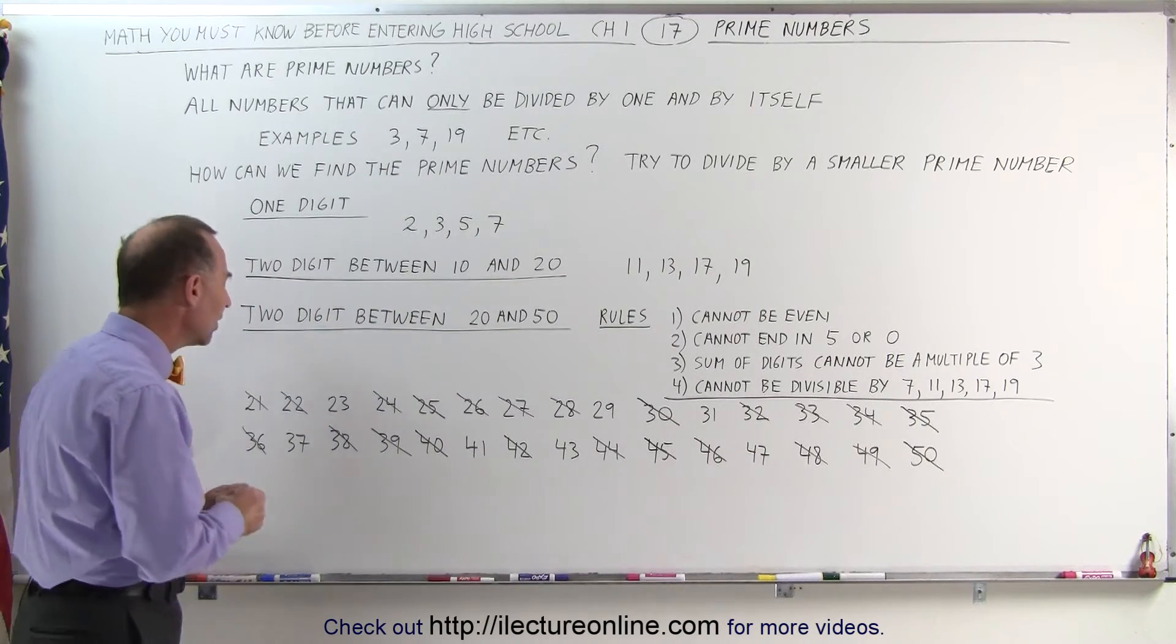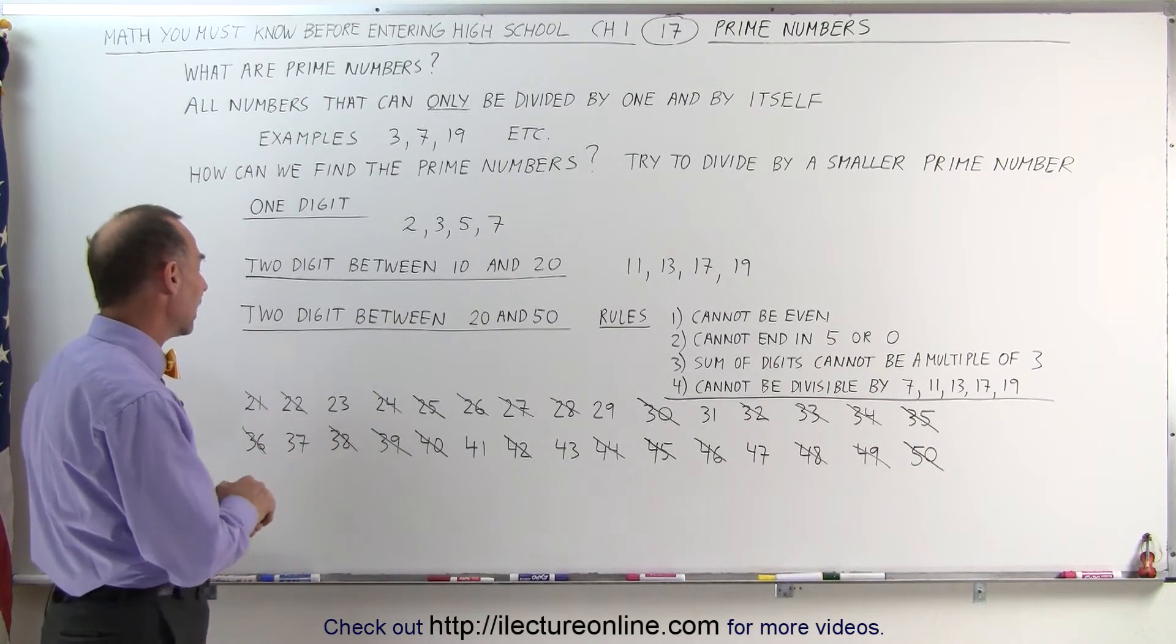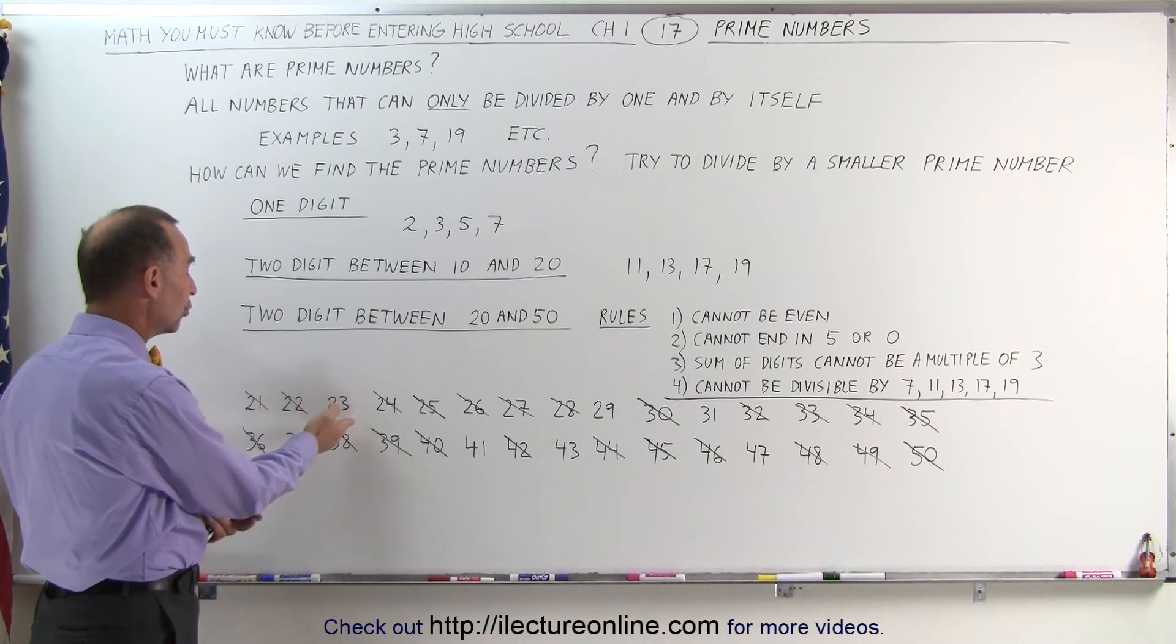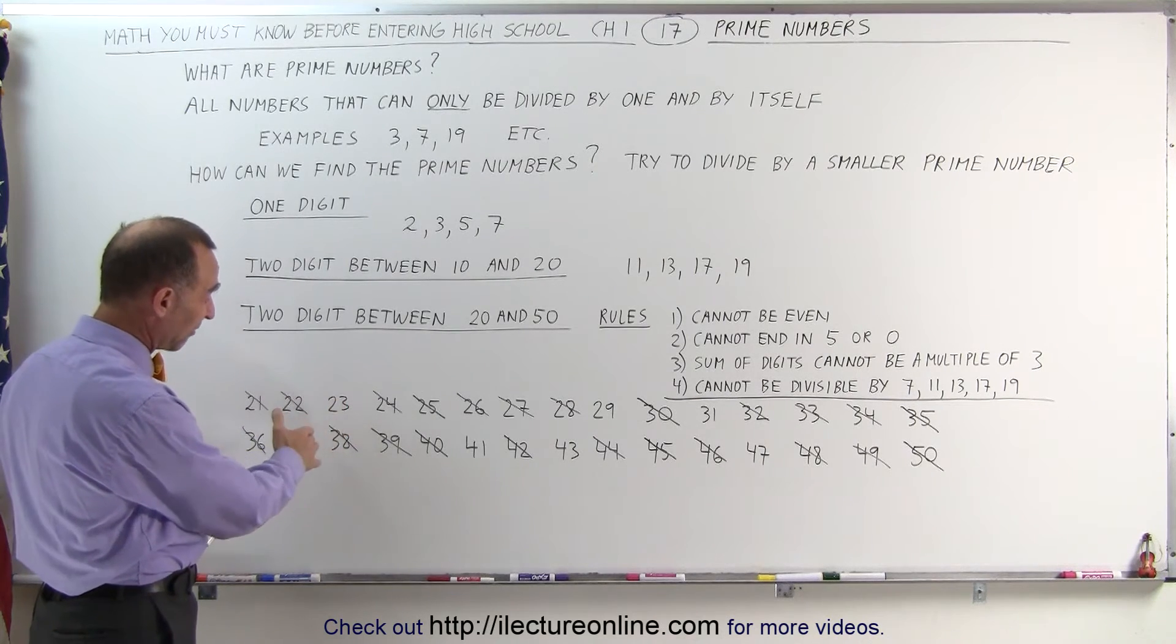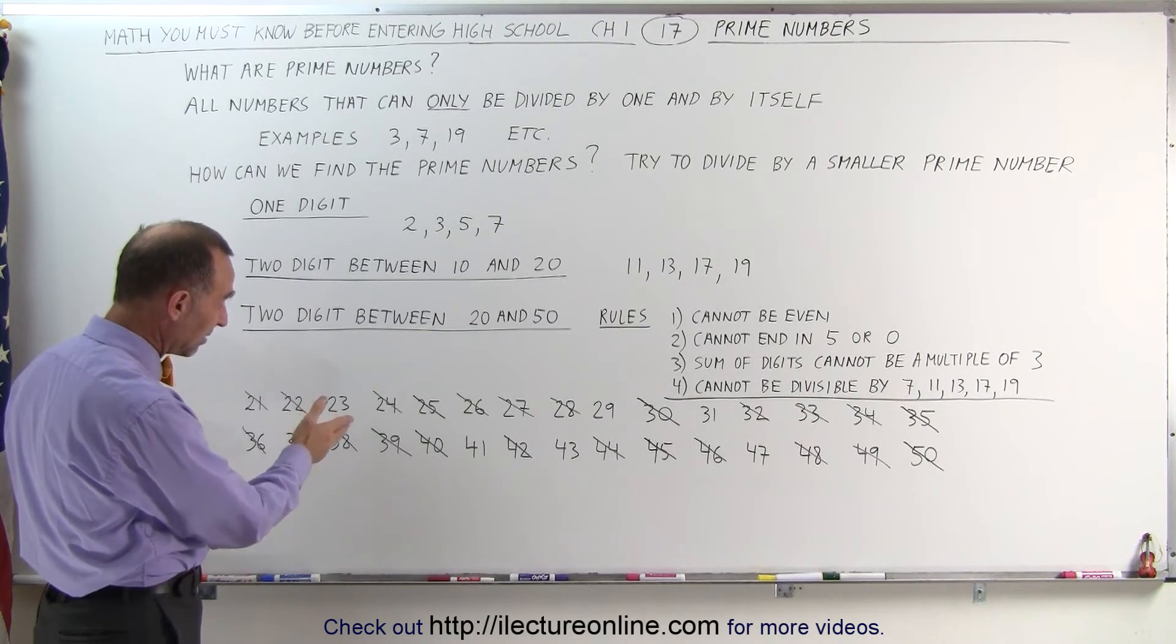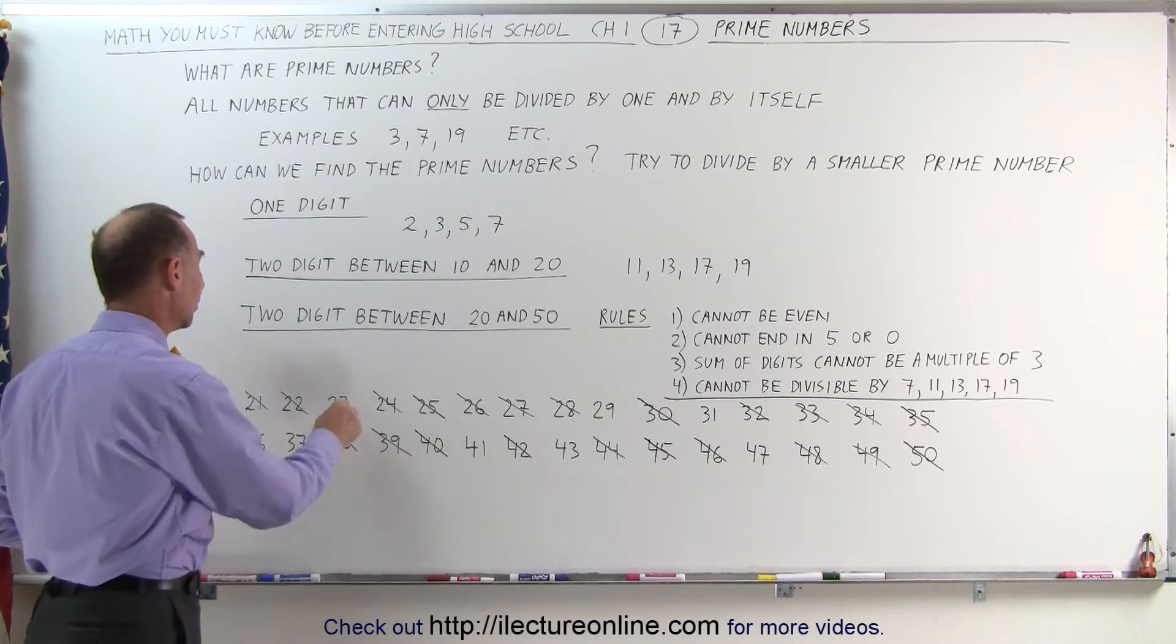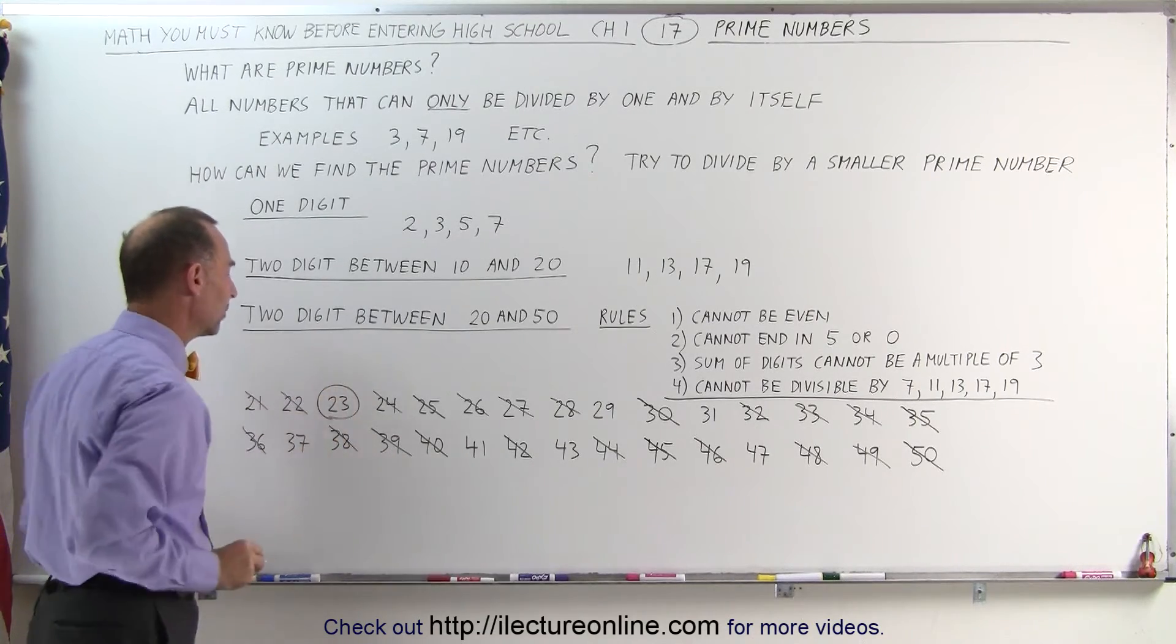Let's now go to each one of those and see if we can figure out if it's a prime number or not. 23 cannot be divided by 2, by 3, by 4, by 5, by 6, by 7, by 8, by 9. I think at this point we determined that is a prime number.